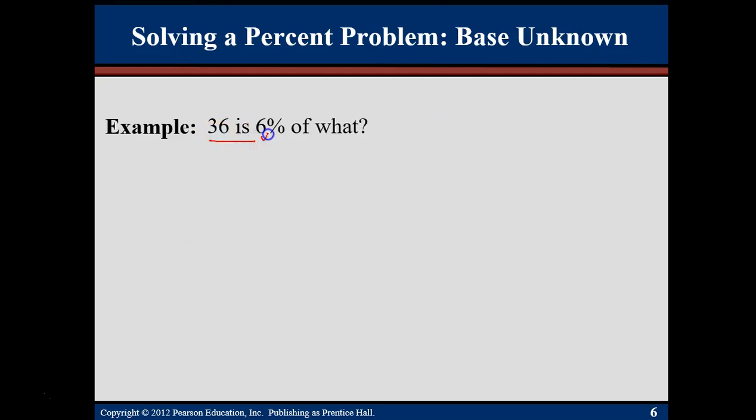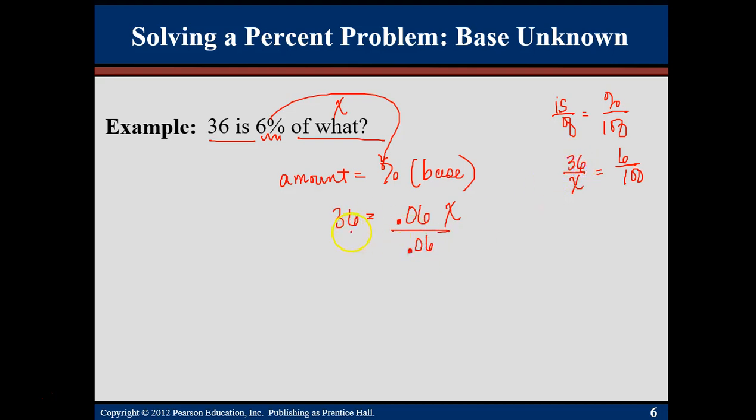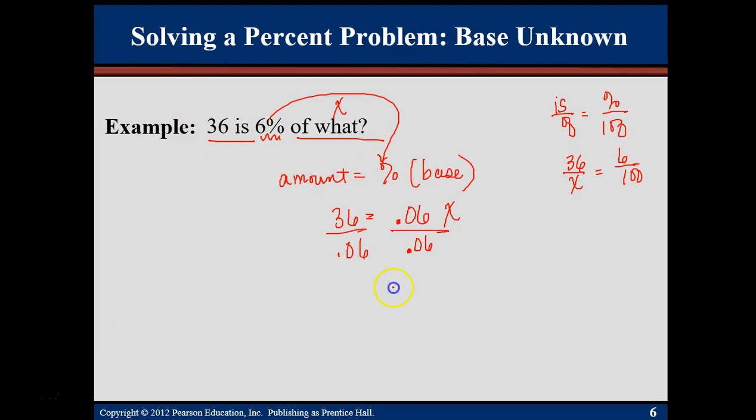36 is 6% of what? So here's my what. That's the x. It's with the of. So if I'm talking about amount equals percent times the base, the base is the of. So that's my x. Percent is percent, but if I'm using an equation, I need to change it to a decimal. The of would be an x down here, which leaves me with an is 36. So 36 would go up there. Now I'll have to divide both sides by .06. 36 divided by .06 is 600.